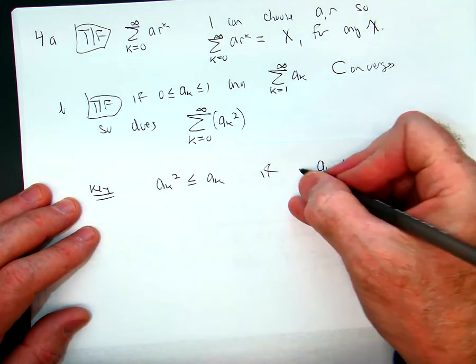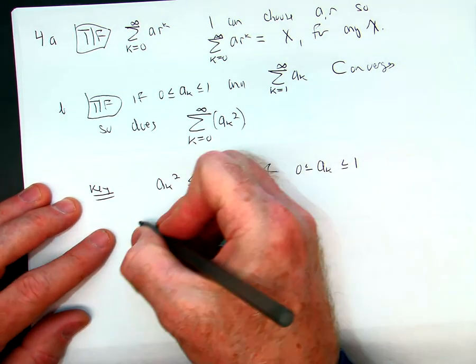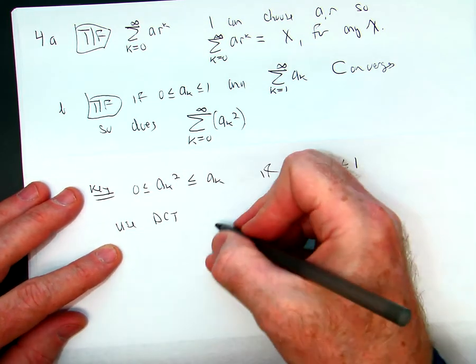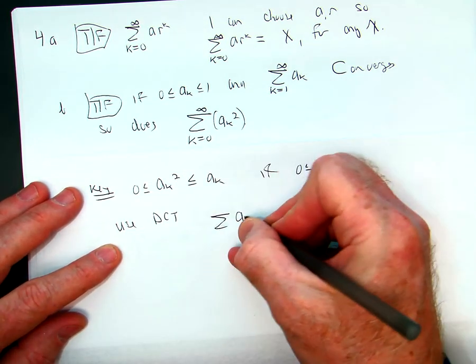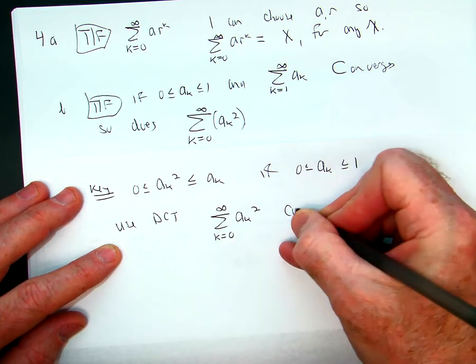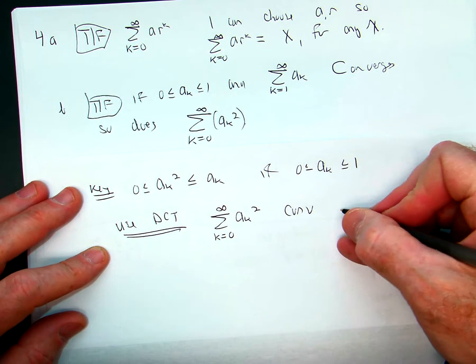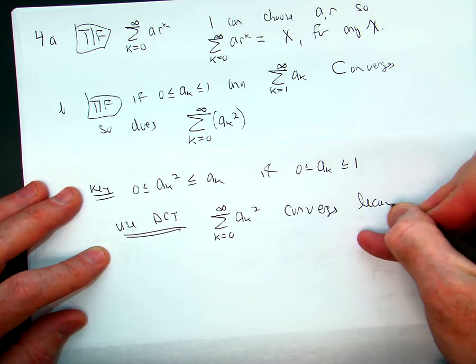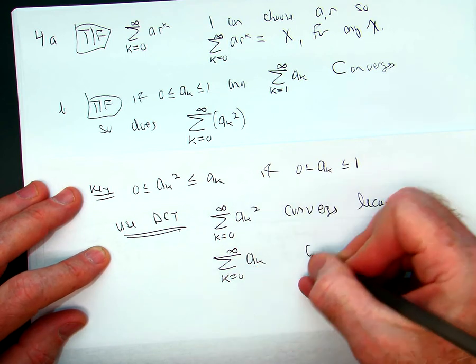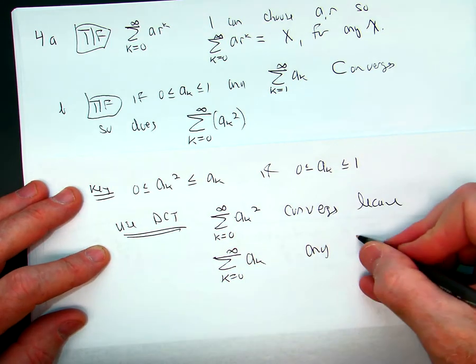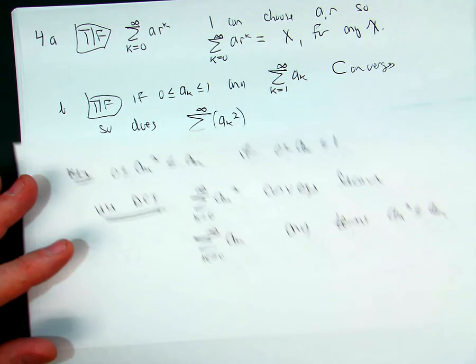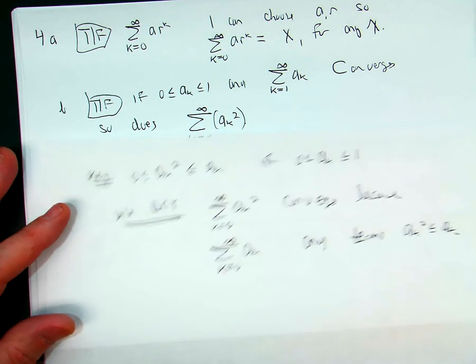So that would mean that if I use the direct comparison test, I'm going to get that this series converges because this series converges and the terms of this series are less. So that's it, that's basically all that is.